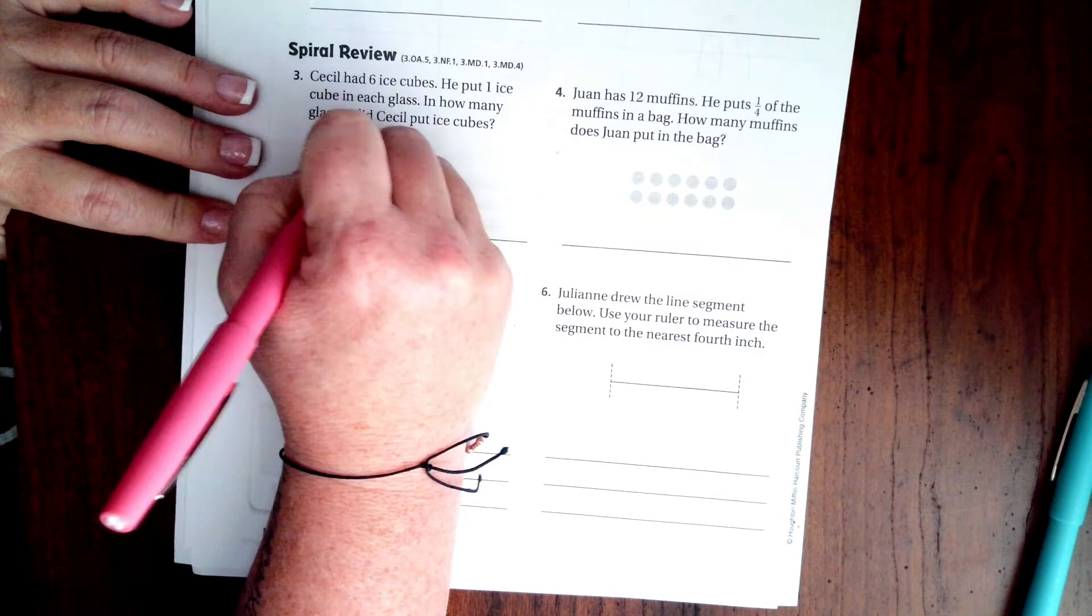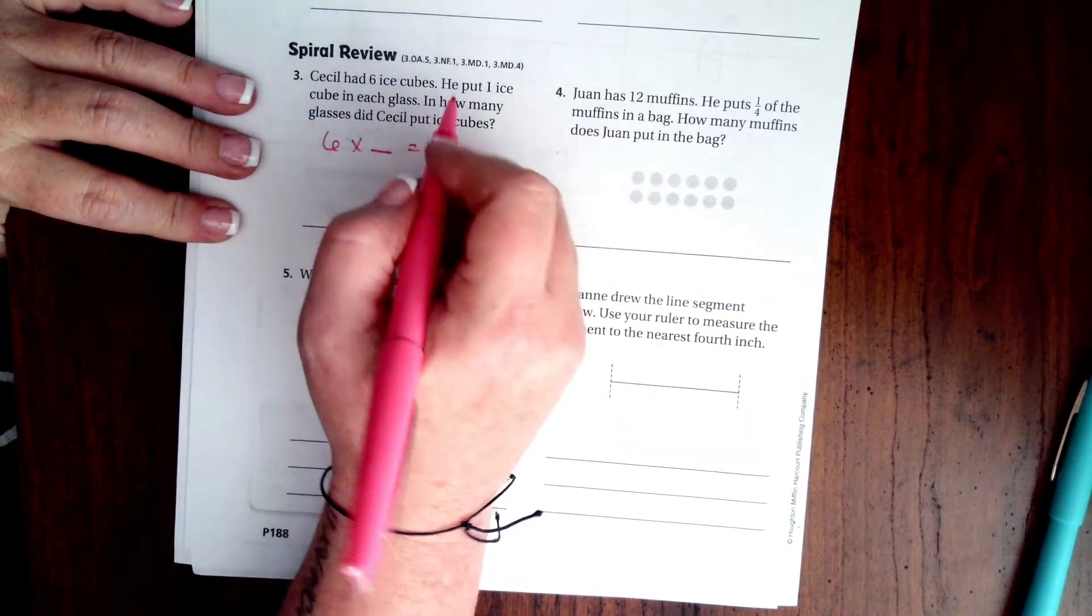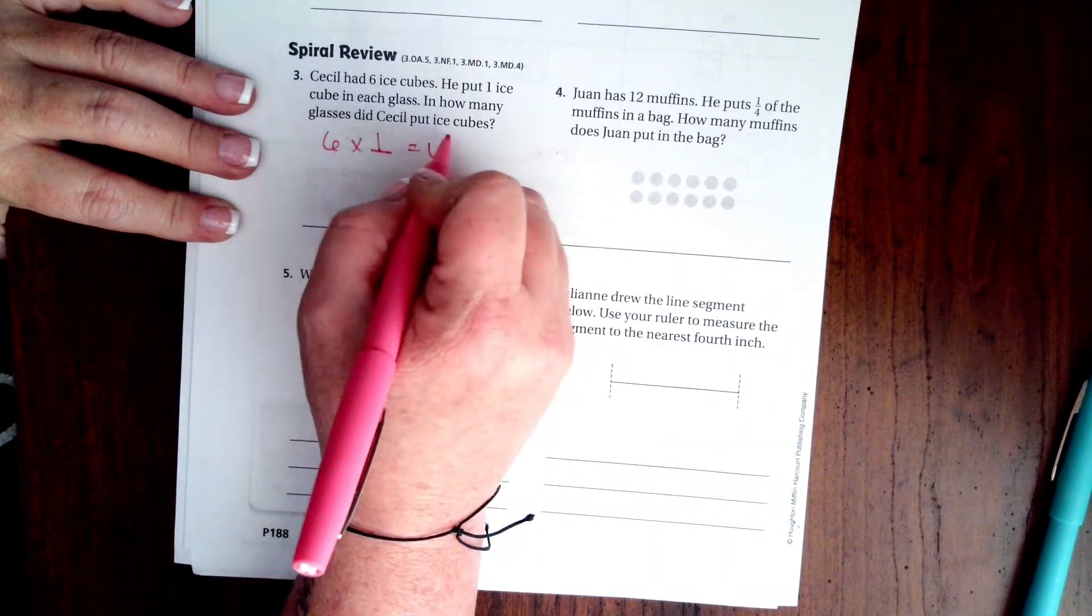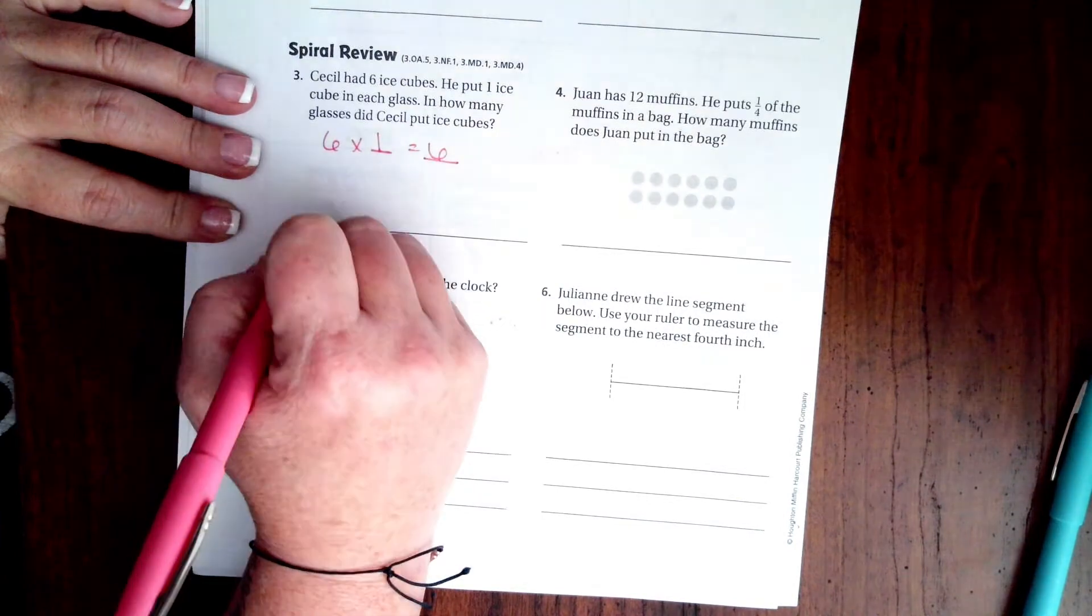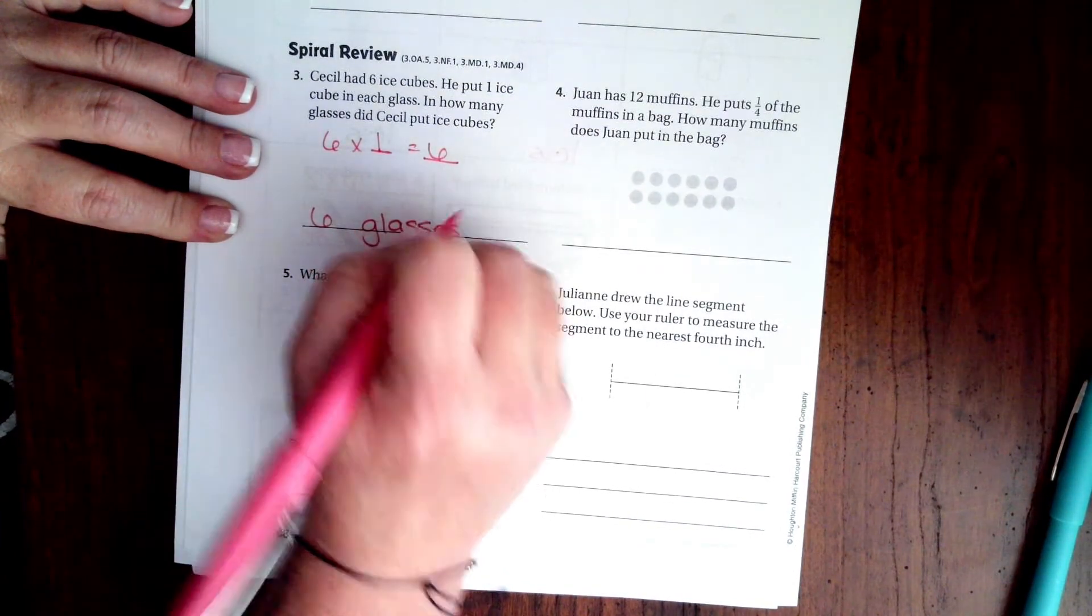Well, six times what equals six? Six times, oh well it already tells you one. How many glasses did Cecil put ice cubes in? So six glasses.